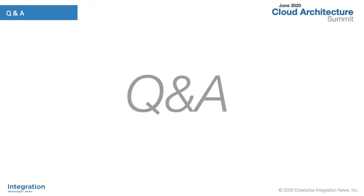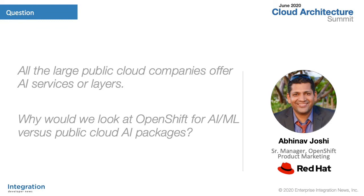We're glad to have you here, and as you might expect, you've triggered quite a number of questions. One of the big comments reflects the fact that a lot of the public cloud companies have come out with an AI offering or AI tooling layer. The question is: when should an organization look at using OpenShift for AI/ML versus some of these public cloud AI packaging options?